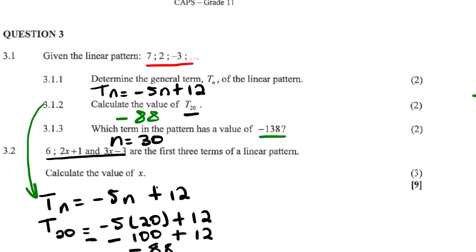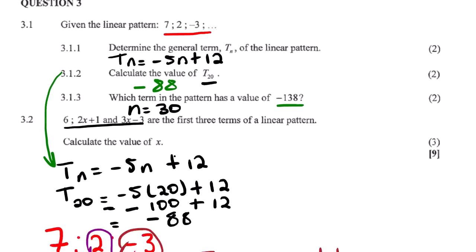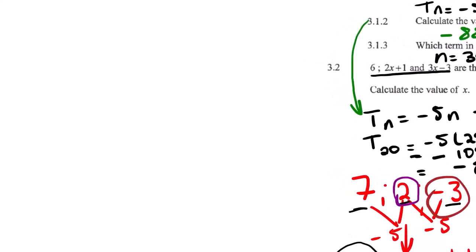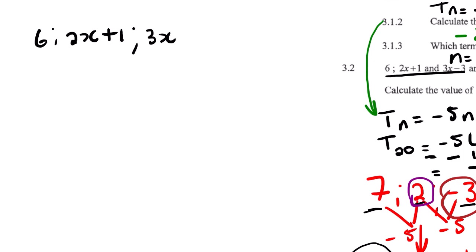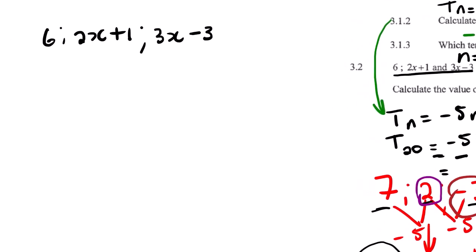Now for question 3.2, we are given a pattern where the first three terms of a linear pattern are used to calculate the value of x. Let us rewrite the terms: we have 6, then 2x plus 1, and then 3x minus 3.